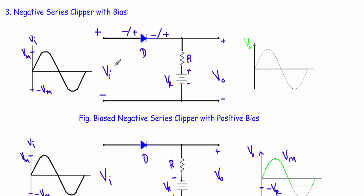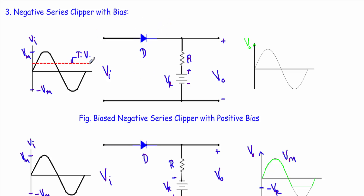So first, the input voltage has to overcome the effect of this reference or bias voltage to drive the diode in forward bias. If the input voltage is exactly equal to our reference voltage Vr, the effects of the input voltage and the reference voltage will be equal, so the diode current Id will be equal to zero. This Vi equal to Vr is our transition voltage. For input voltage above this transition voltage, the diode will be in ON state or forward bias. For any input voltage below this transition voltage, the diode will be in OFF state or reverse bias.